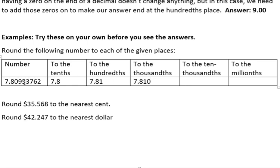To the ten-thousandths: the ten-thousandths is the next number, which is the five. Look one to the right - that's a three. The five does not go up, it stays the same. So we would end up with 7.8095.